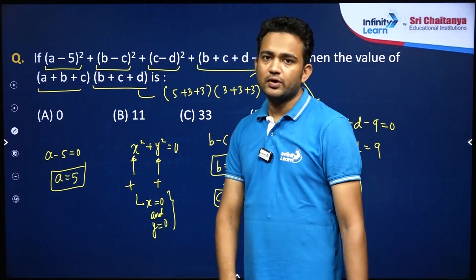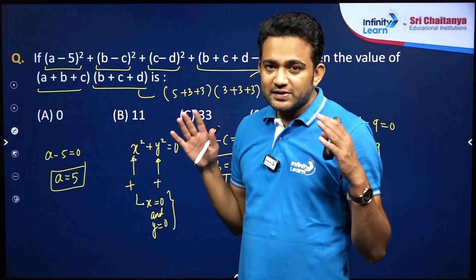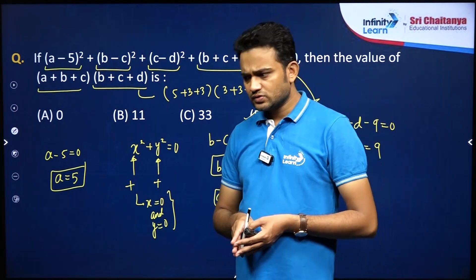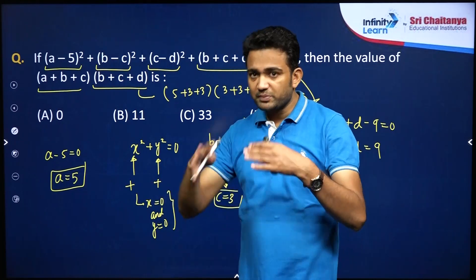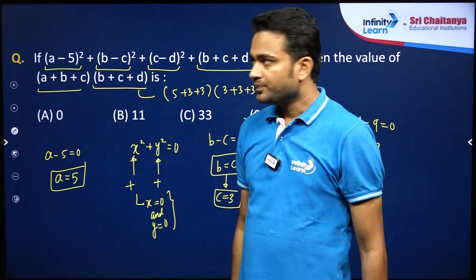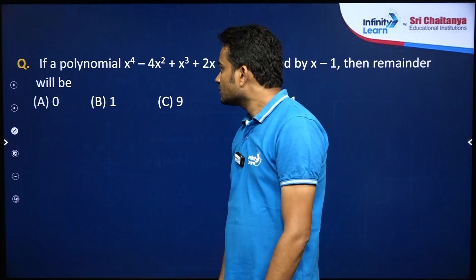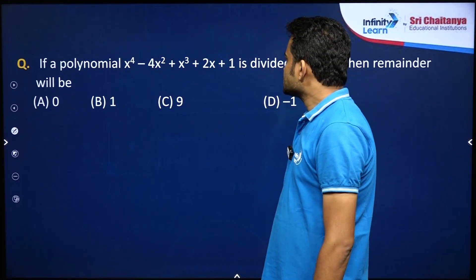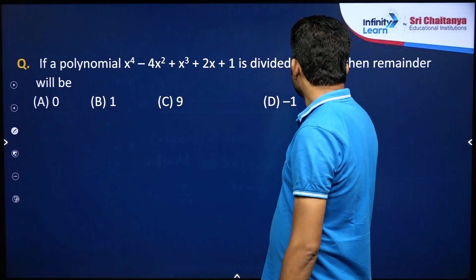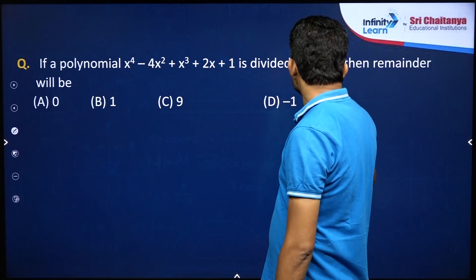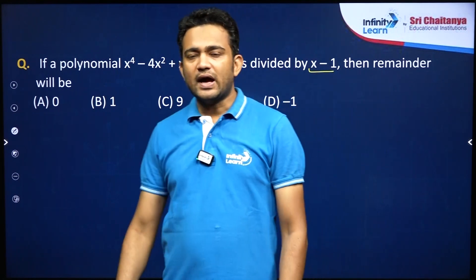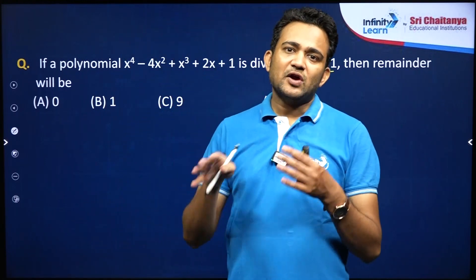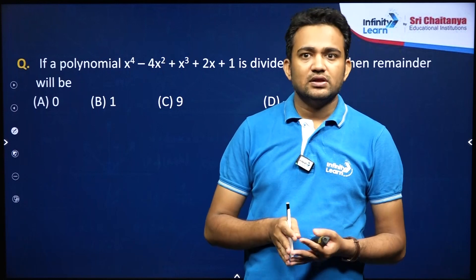So the right answer is option D. Again, this concept is very important to solve questions of algebra — we try to solve questions from different logic. Now the next one: if a polynomial x power 4 minus 4x square plus x cube plus 2x plus 1 is divided by x minus 1, then the remainder will be. This is quite an easy question — simply try to write the correct answer in the chat box.